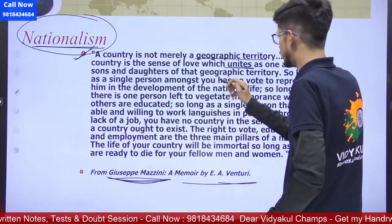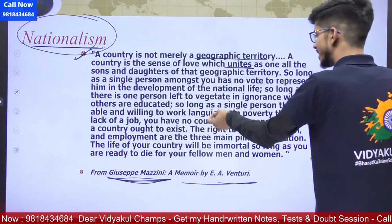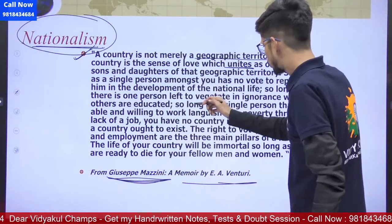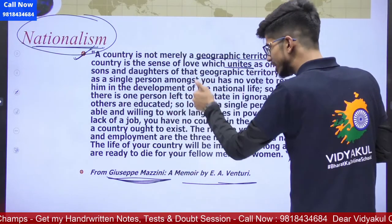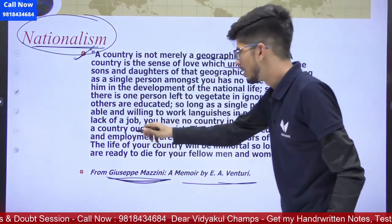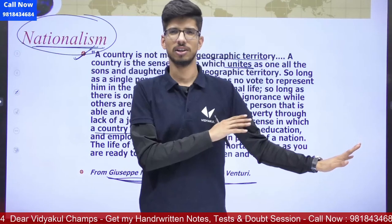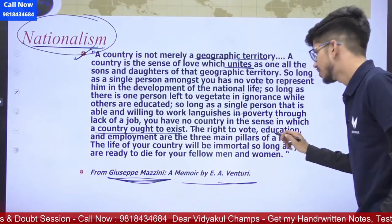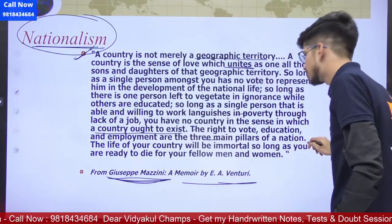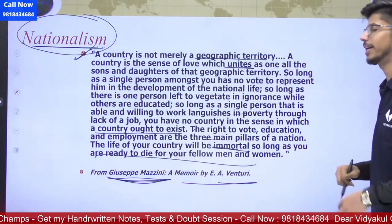So long as a single person amongst you has no vote to represent him in the development of national life; so long as there is one person left to vegetate in ignorance while others are educated; so long as a single person able and willing to work languishes in poverty through lack of a job — you have no country in the sense in which a country ought to exist. The right to vote, education, and employment are three main pillars of a nation. The life of your country will be immortal so long as you are ready to die for your fellow men and women.